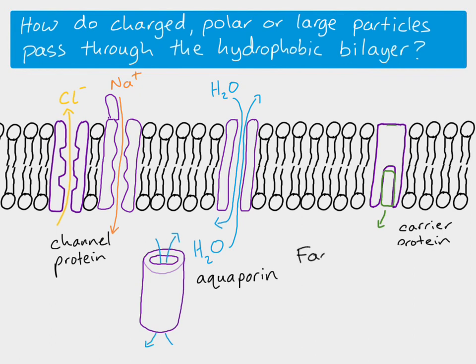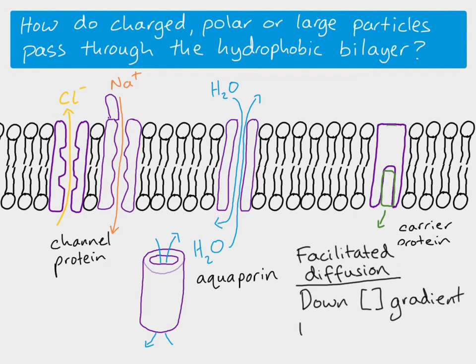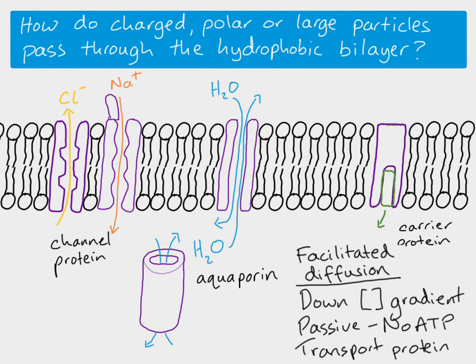All of these are facilitated diffusion, which means that substances are moving down the concentration gradient. They are passive — there is no ATP being used — and they use transport proteins. Even with the carrier protein, which changes shape, it does so passively, just as a result of the binding and the effect that has on the transport protein molecule. There is no ATP used to move a molecule across a transport protein if it's moving by facilitated diffusion.